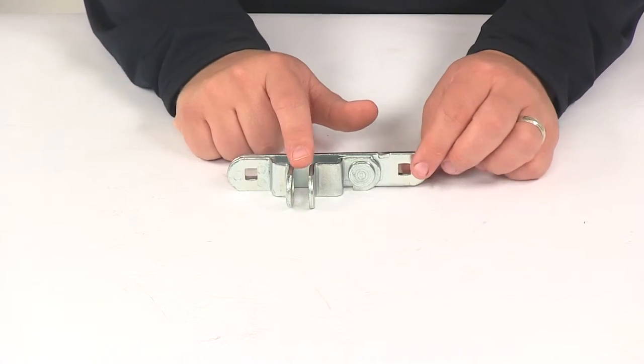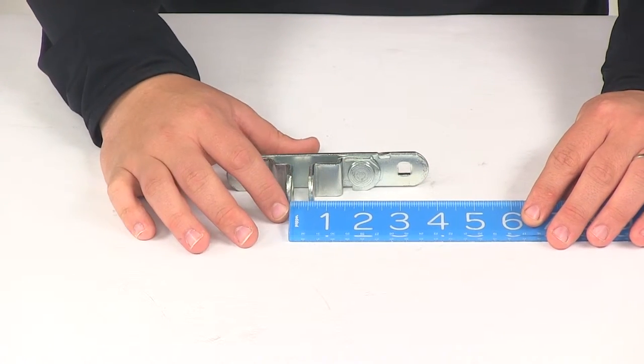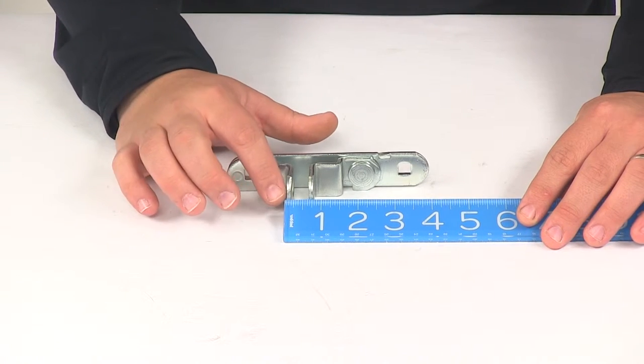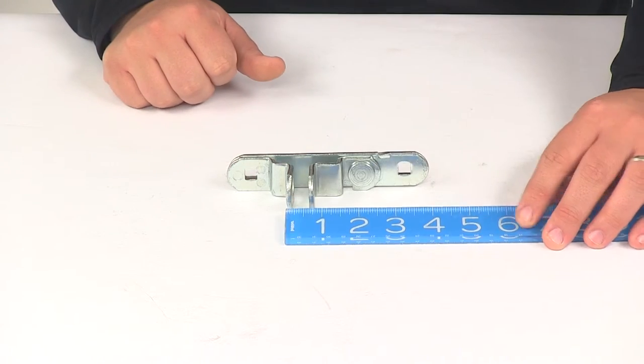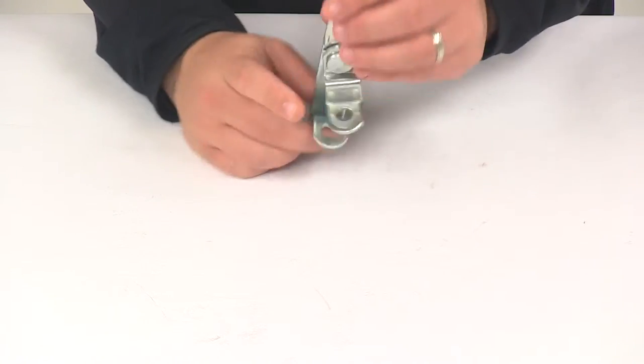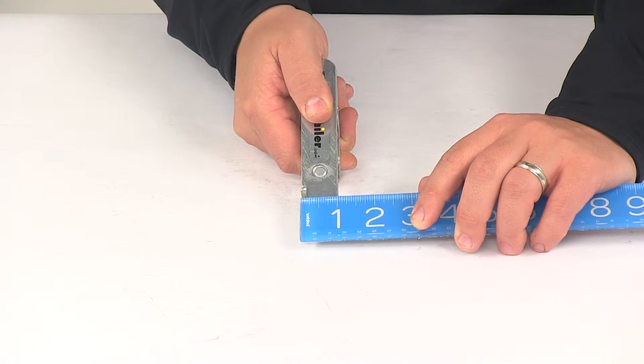Right here we'll take a distance measurement between the tabs and we'll see that's going to measure about a half an inch, and then outer edge to outer edge of the tabs we're looking at about three-quarters of an inch. The tab width, or really the overall width of the unit, is going to measure about one inch wide.